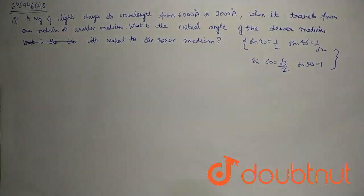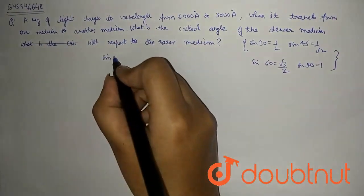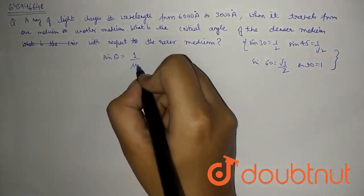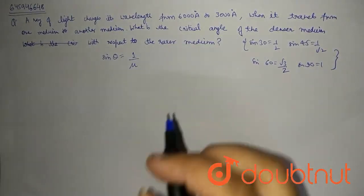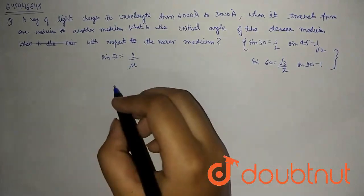First, we need the critical angle formula which is sin θ = 1 / refractive index. So, we need to find the refractive index.